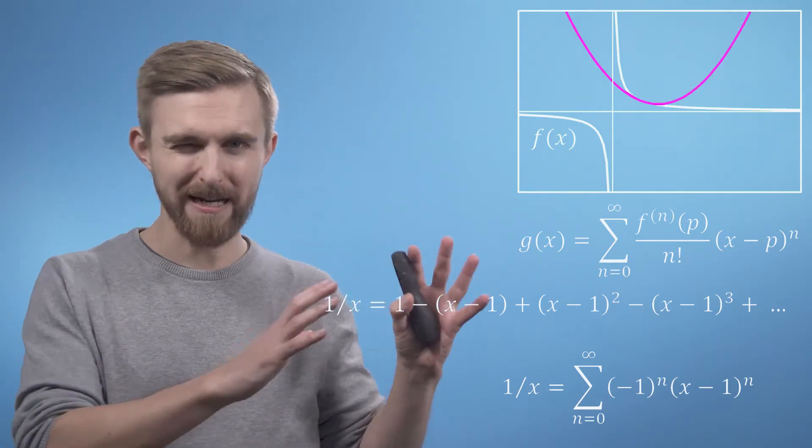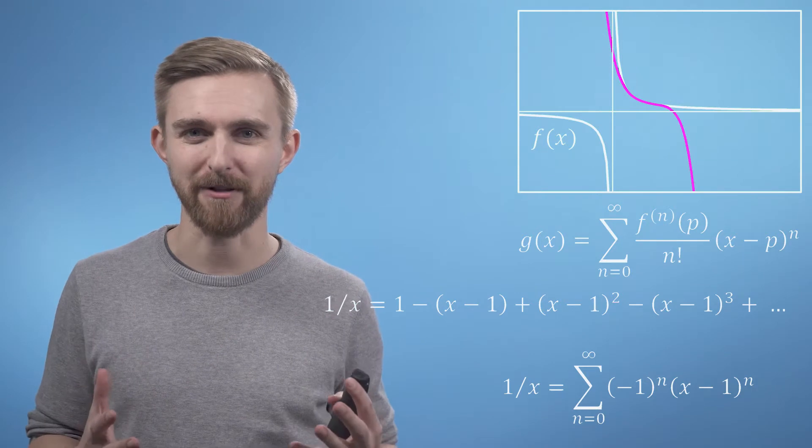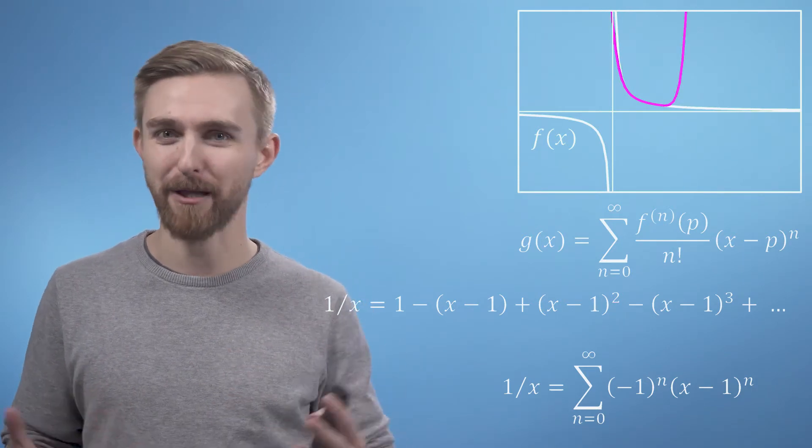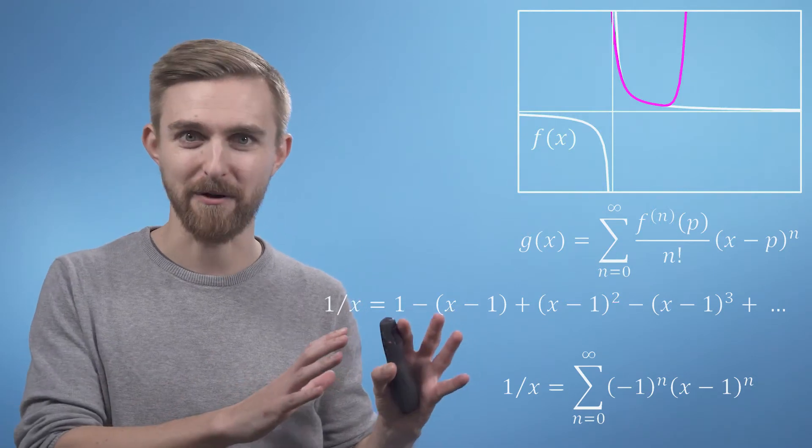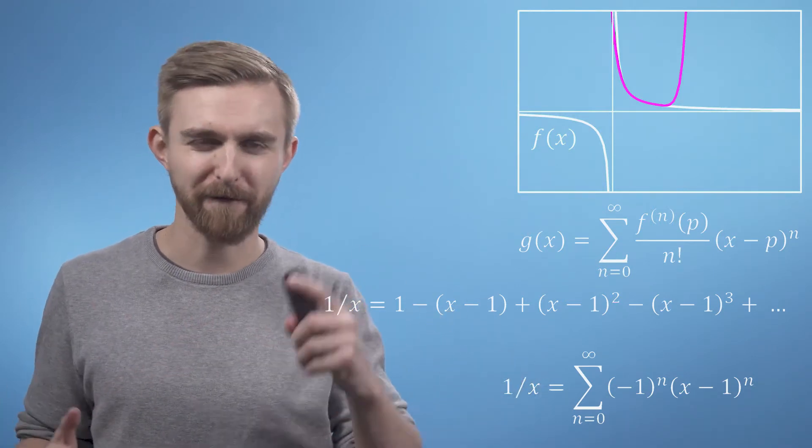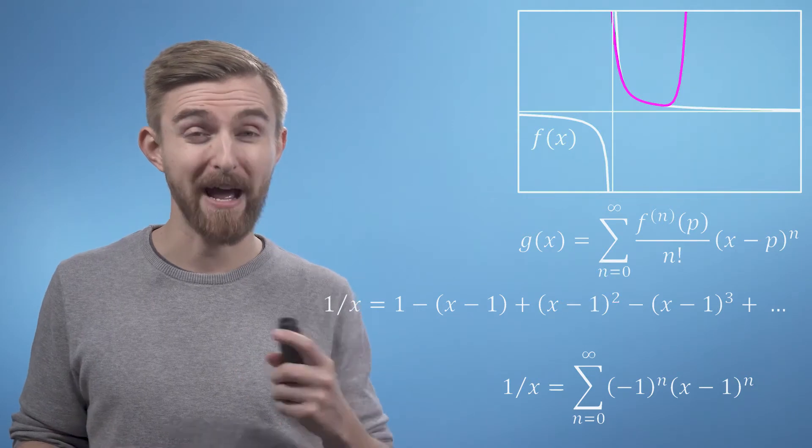There are several really interesting features of this particular example which tell you interesting things about the power series more generally. Firstly the approximations ignore the asymptote going straight across it. And furthermore the region of the function where x is less than 0 is not described at all by the approximations.